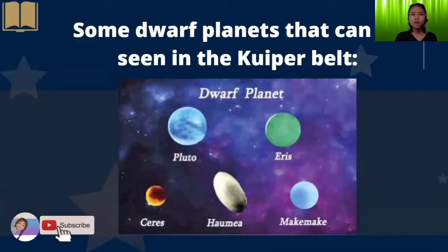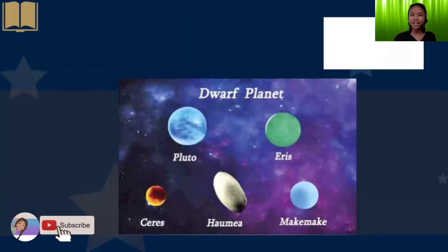Now, what are some dwarf planets that can be seen in the Kuiper Belt? You have here Pluto, Eris, Ceres, Haumea, and Makemake.